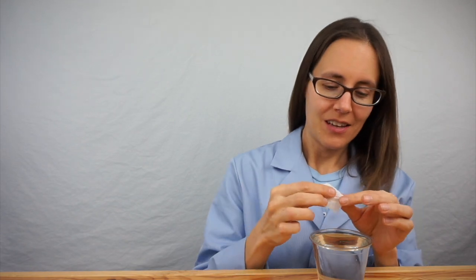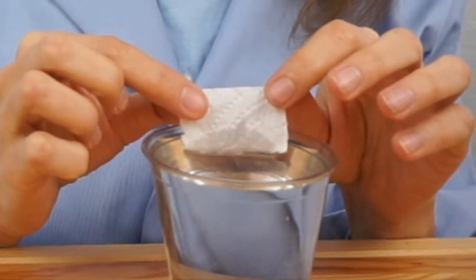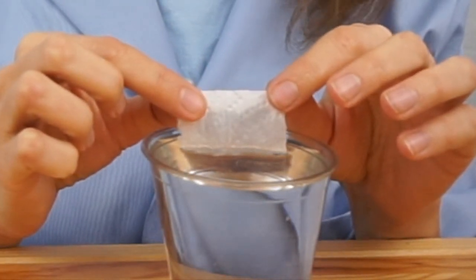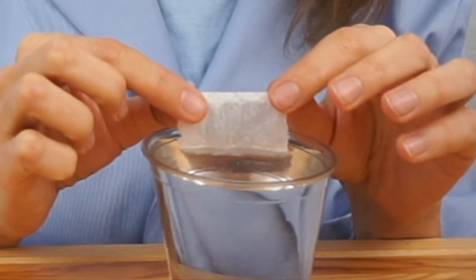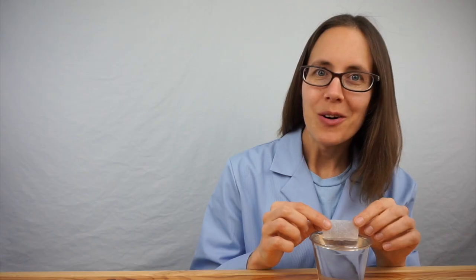But water can move uphill too. I'll show you with a paper towel. I dip just the bottom edge of this paper towel in water, and in just a few seconds, the entire paper towel is wet. Water traveled uphill against the force of gravity. How is this possible?